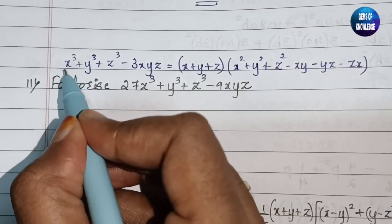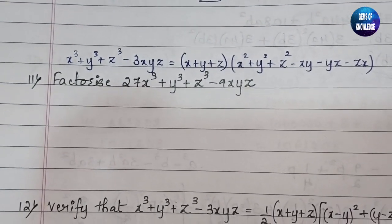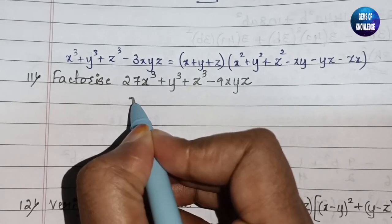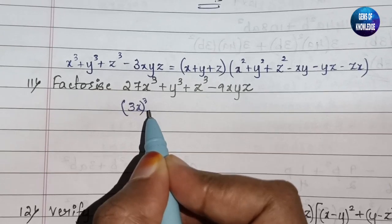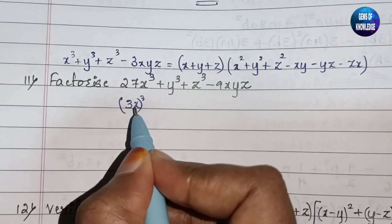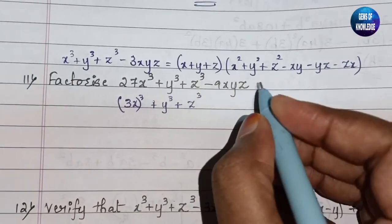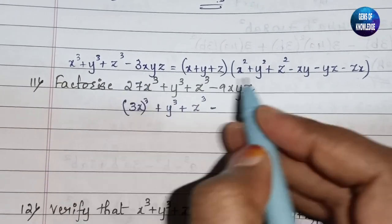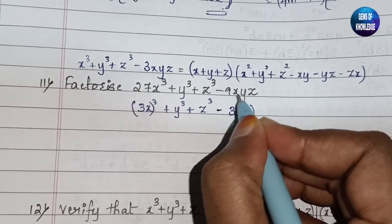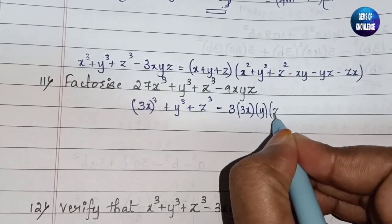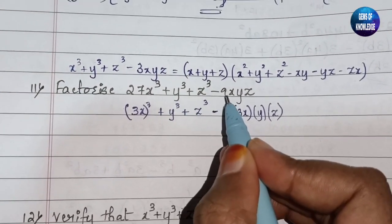You can see that x³ + y³ + z³ - 3xyz is in this format. So what we can do is write 27x³ in the form of (3x)³, because 3 × 3 × 3 = 27. So our x value is 3x, y value is y as it is, and z value is z as it is.